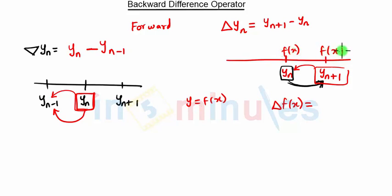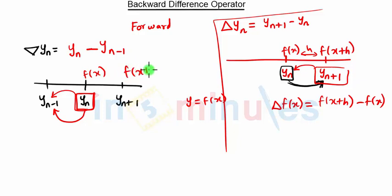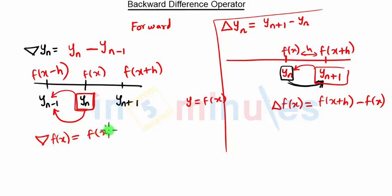If y = f(x), then the forward difference operator gives: Δf(x) = f(x+h) - f(x), where h is the interval between two variables. Correspondingly, the backward difference of f(x) is given by: ∇f(x) = f(x) - f(x-h). So this is the backward difference operator in terms of a continuous function.